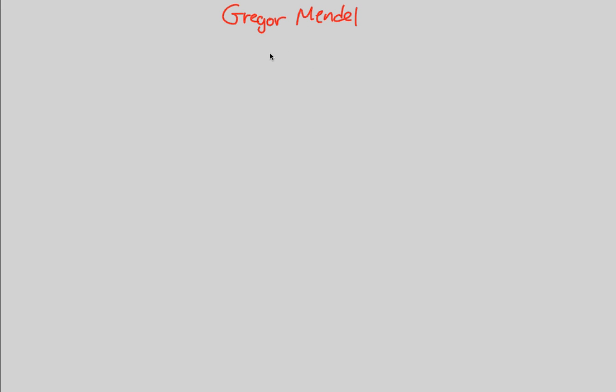Before we go into the actual process of Mendelian genetics and look at specific examples, we first have to speak about Gregor Mendel, one of the most important biologists of all time. His work was not appreciated until after his death, and we can begin this discussion with some basic background information on the man himself, Gregor Mendel.